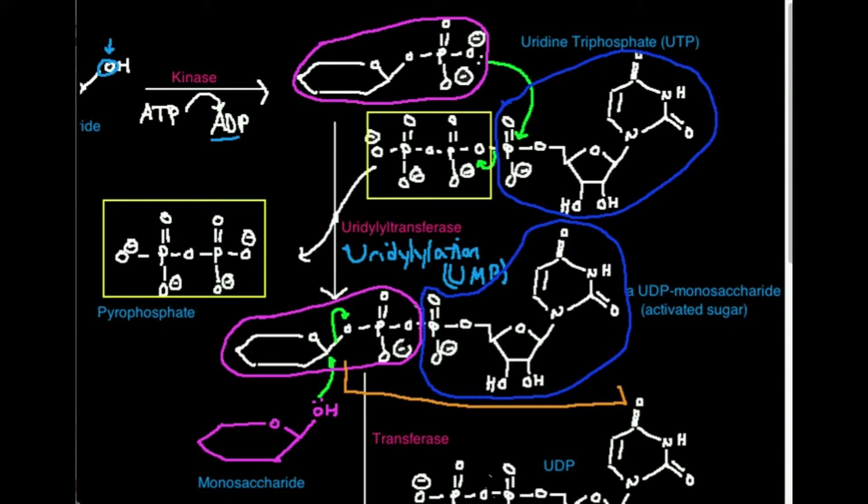If this monosaccharide over here was glucose, you would call it UDP glucose. If it was galactose, you'd call it UDP galactose. If it was N-acetylglucosamine, it would be UDP N-acetylglucosamine. So you call it UDP, and then name whatever monosaccharide is attached to it.